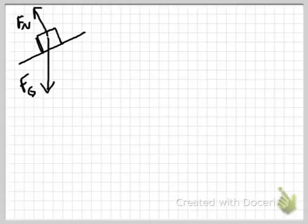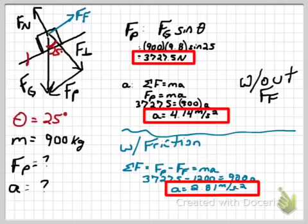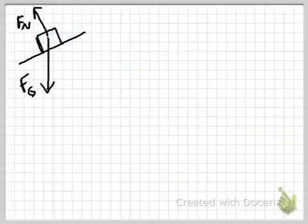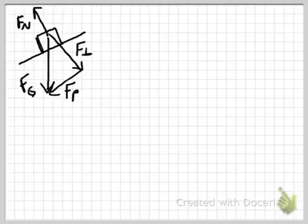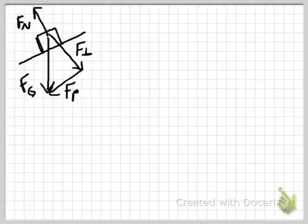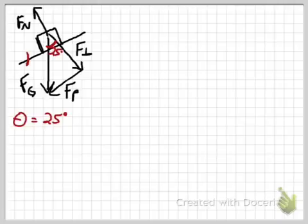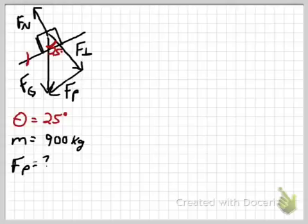I want to start with our free body diagram. We've got our weight acting down and our normal force acting at an angle. The next thing I need to do is break that weight into components. I'm labeling these a little bit differently — I've got an F of P, calling that a parallel force, and an F perpendicular, instead of my x and y. Now that I've got those forces defined, we know our angle, and the angle of the incline is equal to the angle of the triangle that our vectors make. We also know the mass of the polar bear.